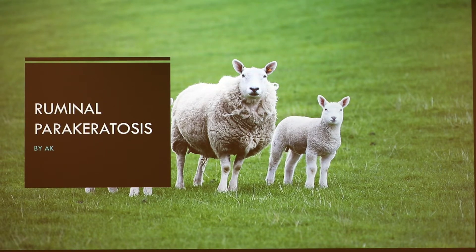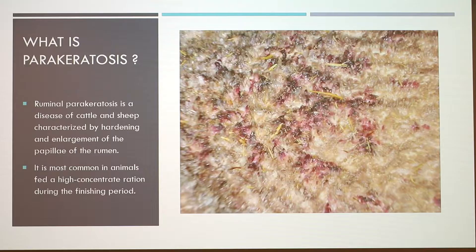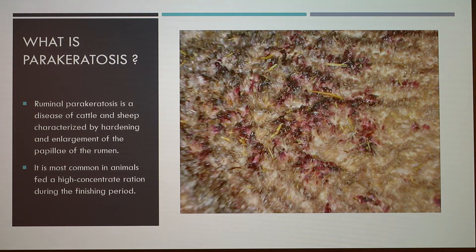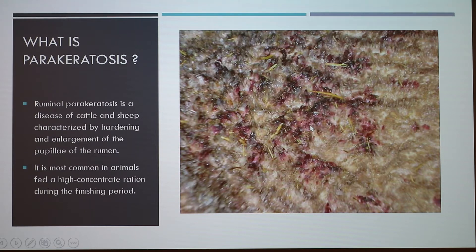Today I'll be discussing ruminal paracarotosis. Ruminal paracarotosis is a disease of cattle and sheep characterized by hardening and enlargement of the papillae of the rumen. It is most common in animals fed a high-concentrate ration during the finishing period. The disease results in lesions due to the pH of the rumen being lowered and the increased concentration of volatile fatty acids in the ruminal fluid.